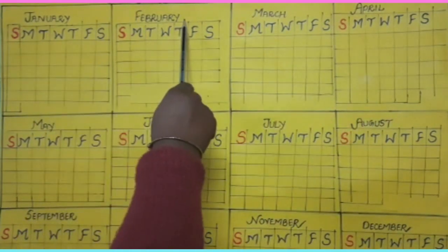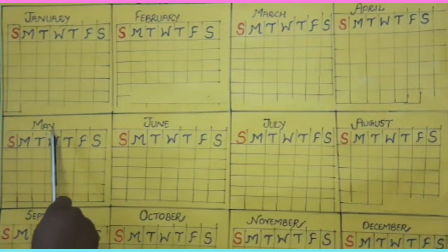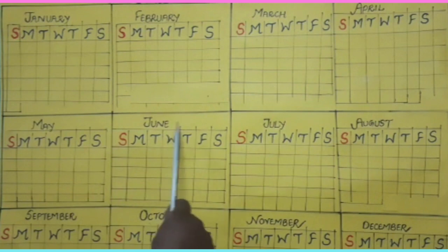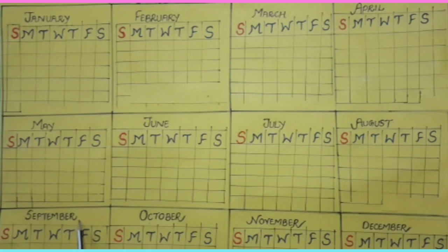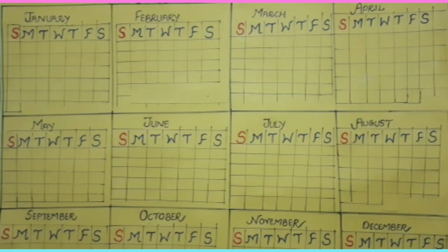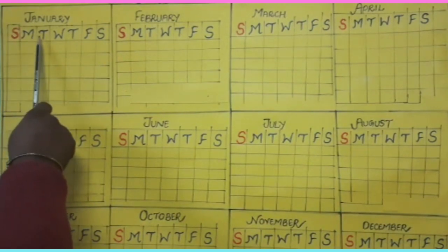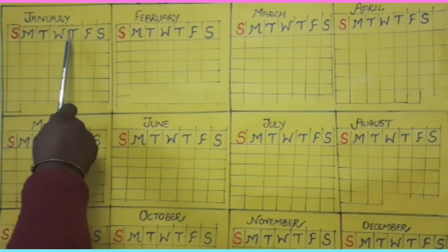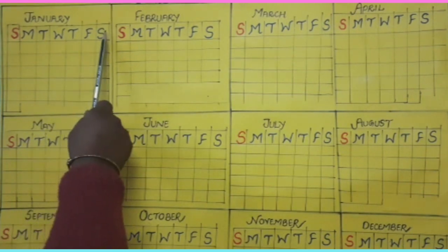Write the months: January, February, March, April, May, June, July, August, September, October, November, December. Then write the days of the week: Sunday, Monday, Tuesday, Wednesday, Thursday, Friday, and Saturday.